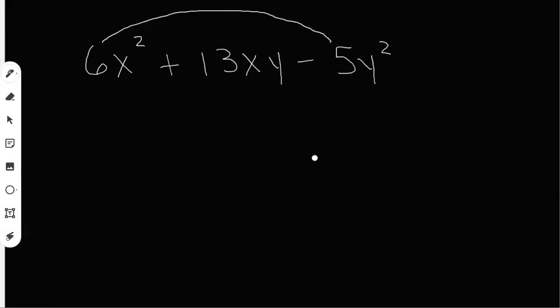Whatever numbers that the rainbow hits, we're going to multiply together. So 6 times negative 5 is going to give me negative 30, and I'll put that over here next to the m.